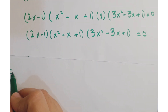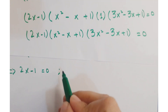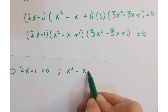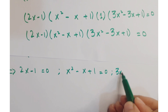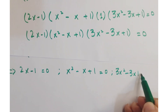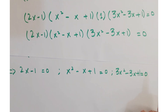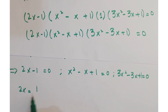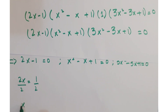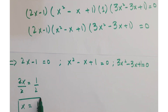This implies 2x minus 1 equals 0, or x squared minus x plus 1 equals 0, or 3x squared minus 3x plus 1 equals 0. Working on the first equation, we have 2x equals 1, so dividing both sides by 2, x equals 1 upon 2.